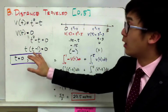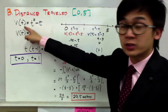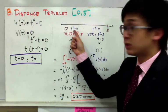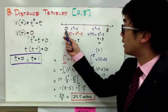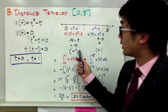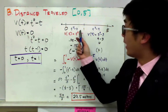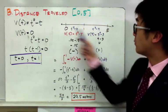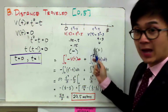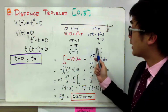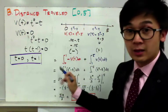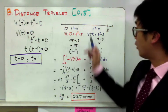We find the sign of v(t) on each subinterval. Between 0 and 1, substituting t = 0.5 gives a negative result, so v(t) is negative on [0, 1]. For the interval [1, 5], substituting t = 3 gives a positive result, so v(t) is positive on [1, 5]. Using this sign chart, we write separate integral notations: the first from 0 to 1 uses a negative sign since the function is negative there.